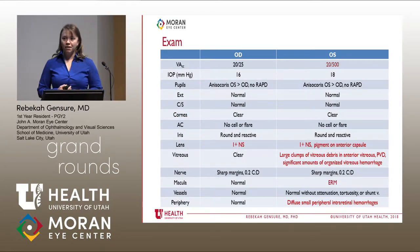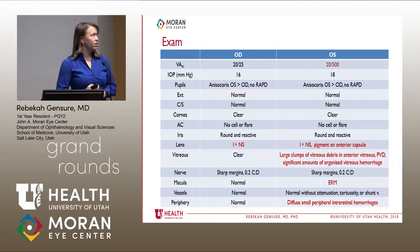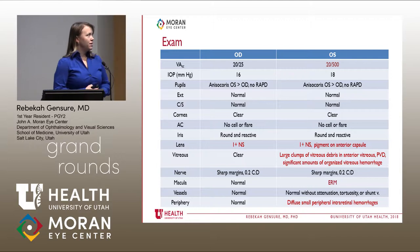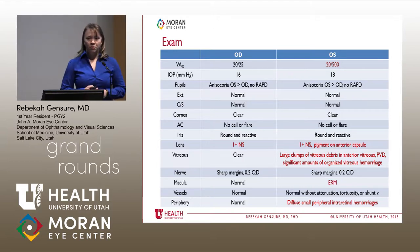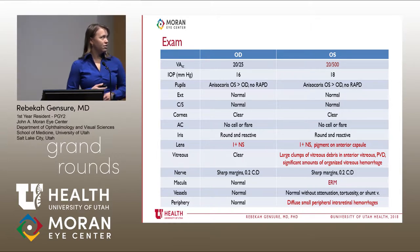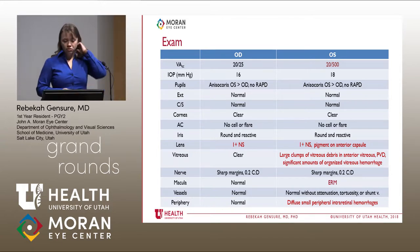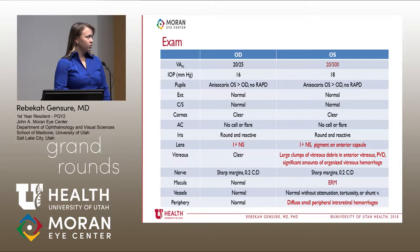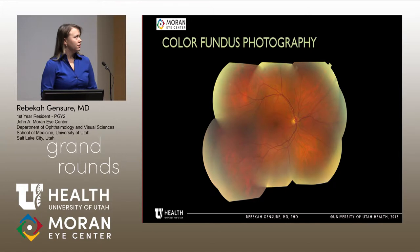On exam, vision in the left eye was quite poor at 20/500; the right eye was normal. Pressures were normal. The anterior segment exam was unremarkable, but dilated fundus exam of the left eye revealed large clumps of vitreous in the anterior vitreous, significant organized retinal hemorrhage, and diffuse peripheral intraretinal hemorrhages.